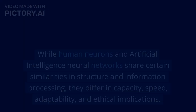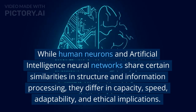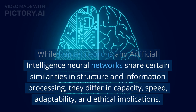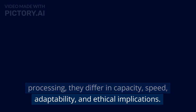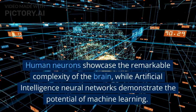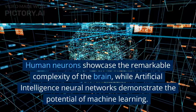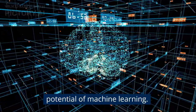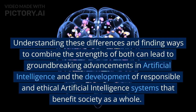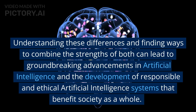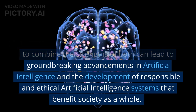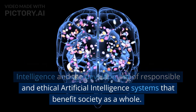While human neurons and artificial intelligence neural networks share certain similarities in structure and information processing, they differ in capacity, speed, adaptability, and ethical implications. Human neurons showcase the remarkable complexity of the brain, while artificial intelligence neural networks demonstrate the potential of machine learning. Understanding these differences and finding ways to combine the strengths of both can lead to groundbreaking advancements in artificial intelligence and the development of responsible and ethical artificial intelligence systems that benefit society as a whole.